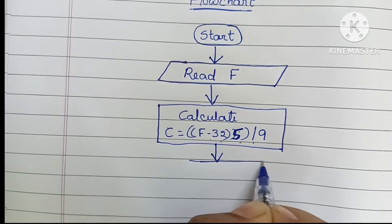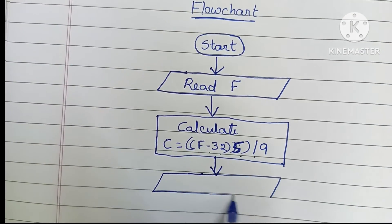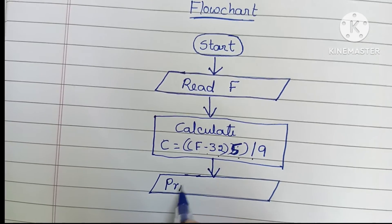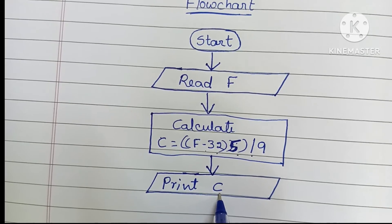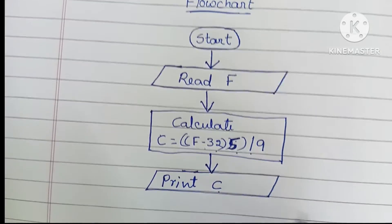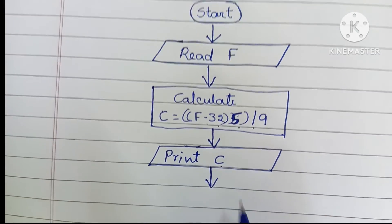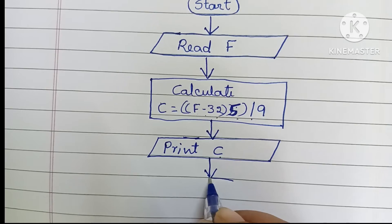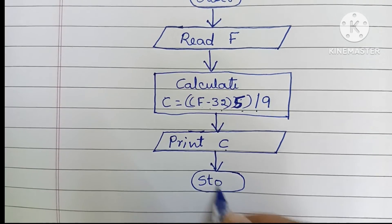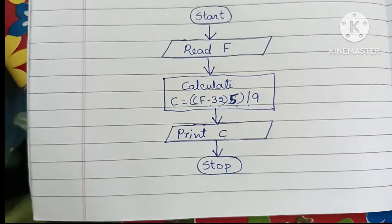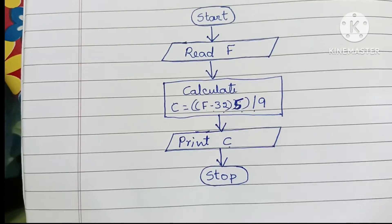Next, we have to display the output using a parallelogram shape: Print C. C is the output value, and results are always written within a parallelogram shape. Finally, we stop the flowchart using an oval shape with the stop statement written inside it. This is the flowchart to convert temperature from Fahrenheit to Celsius.